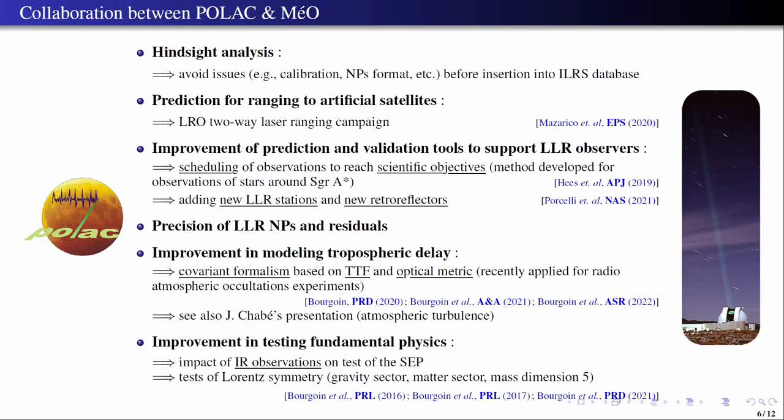Here is a kind of summary about the different topics that we are working on with the Grass laser station. We have, for instance, work on the prediction for laser ranging to artificial satellites, also we try to improve our prediction and validation tools by adding for instance new LLR stations if there are also new retro-reflectors, so hopefully soon. We are also working on a new tool that would be able to schedule observations in a way that is coherent with scientific objectives, like for instance for testing fundamental physics to know which reflector is better to observe. We have already someone in the team that has implemented such method, especially for observing the orbit of stars around Sagittarius A star.